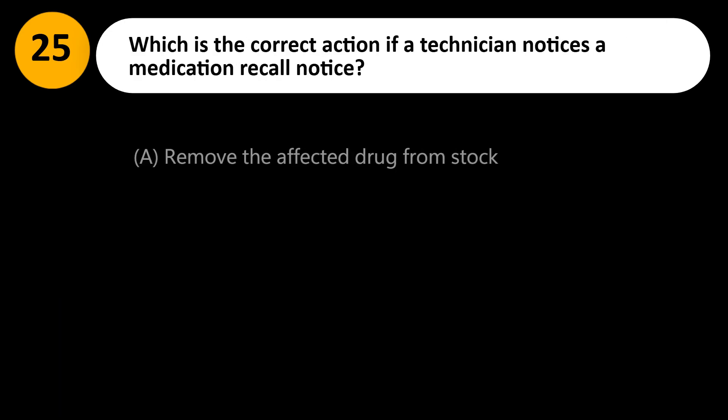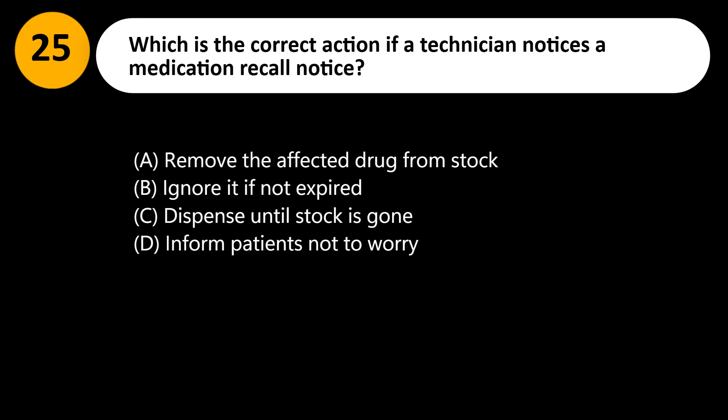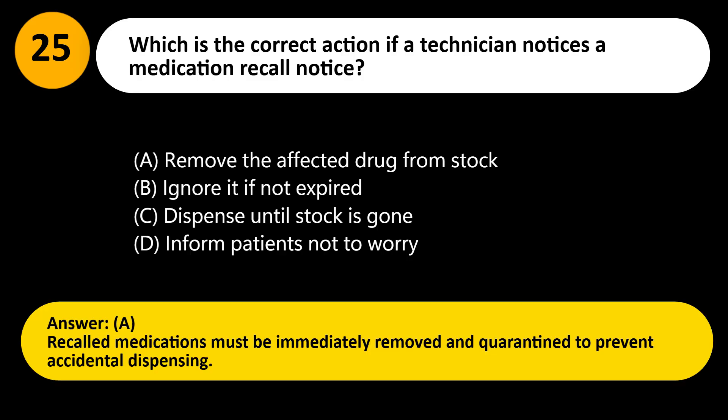Which is the correct action if a technician notices a medication recall notice? A. Remove the affected drug from stock. B. Ignore it if not expired. C. Dispense until stock is gone. D. Inform patients not to worry. Answer: A. Recalled medications must be immediately removed and quarantined to prevent accidental dispensing.